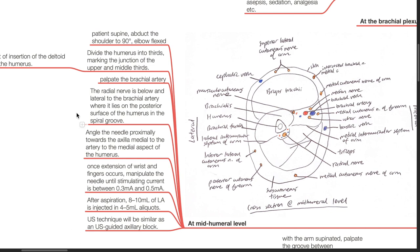Once extension of the wrist and fingers occurs on nerve stimulation, manipulate the needle until the stimulating current is between 0.3 and 0.5 mA. After aspiration, 8 to 10 mL of LA is injected in 4 to 5 mL aliquots. Ultrasound technique will be similar as an ultrasound-guided axillary block.